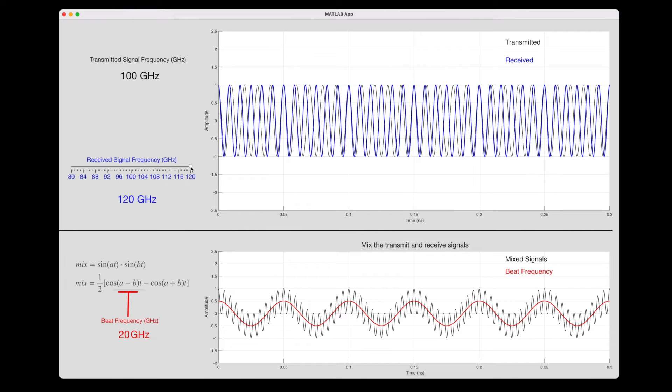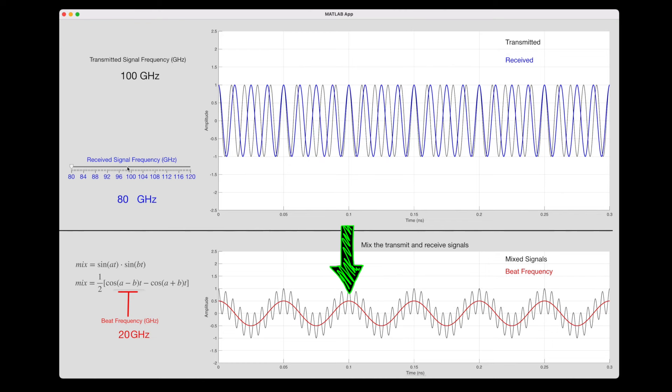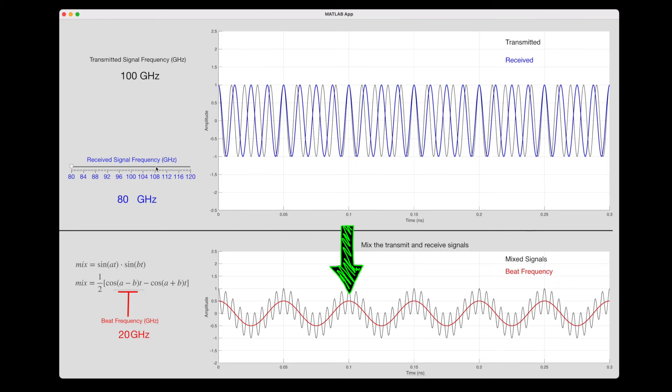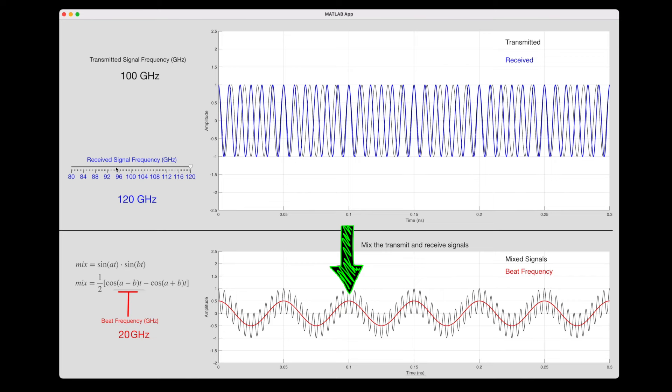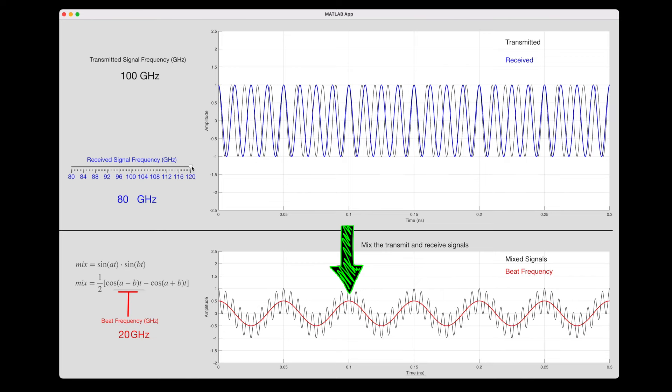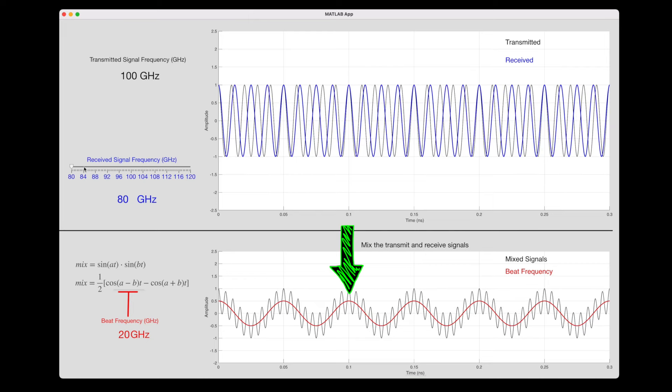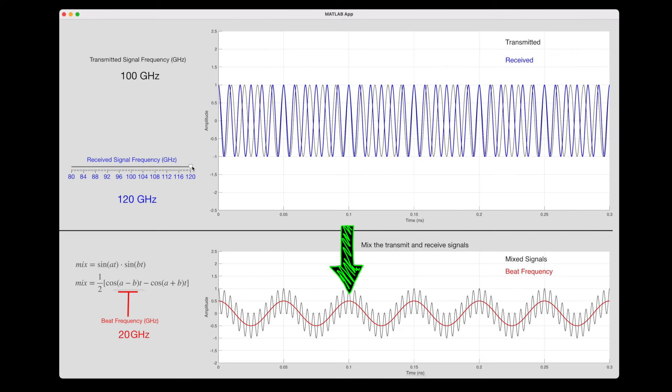However, there is a small problem with how I've set this up. If I toggle back and forth between 120 gigahertz and 80 gigahertz, you'll notice that the beat frequency doesn't change. The difference is 20 gigahertz regardless. This is a radar system with just a real stage, a single transmit signal. And with this setup, we can determine the speed of the object, but not the direction. We can't tell if it's coming towards the radar or moving away.